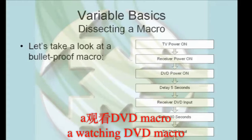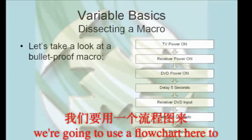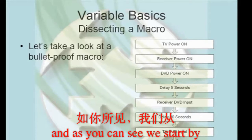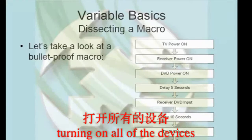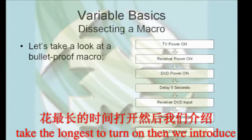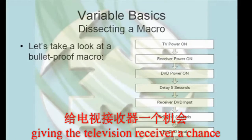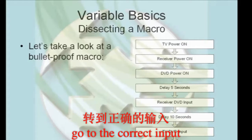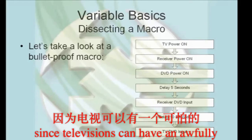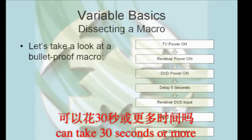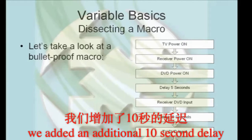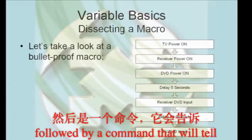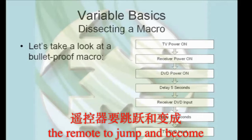What you see is an example of a watchDVD macro. We're going to use a flowchart here to show all the steps in this macro and in their correct order. As you can see, we start by turning on all of the devices, starting with those that take the longest to turn on. Then we introduce a delay, giving the television and receiver a chance to warm up. We then tell the receiver to go to the correct input. Since televisions can have an awfully long warm up time — some front projectors can take 30 seconds or more — we added an additional 10 second delay. Then we tell the TV to go to the correct input, followed by a command that will tell the remote to jump and become a DVD remote control.